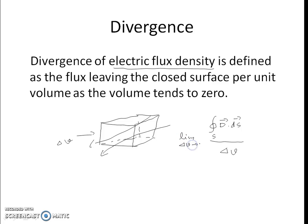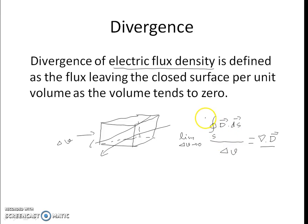In the limit, this ratio will give the divergence of the vector function — in this case, electric flux density. To repeat: the divergence of electric flux density is defined as the flux leaving the closed surface (the numerator term) per unit volume as the volume tends to zero. It is nothing but the net outward flux per unit volume as the volume tends to zero.